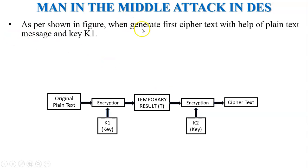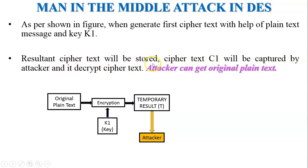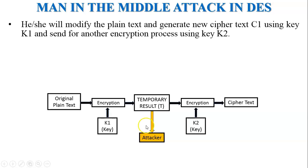As shown in the figure, when the first ciphertext C1 is generated from the plaintext and key K1, that ciphertext C1 — also called temporal result T — is captured by the attacker. The attacker obtains the original plaintext, changes the plaintext, and generates a new ciphertext C1 using key K1, which is then sent to the second encryption process. It is encrypted again using key K2, generating ciphertext 2 — the final ciphertext.